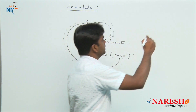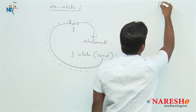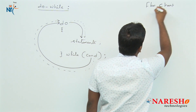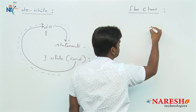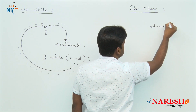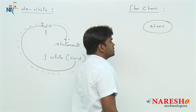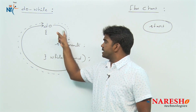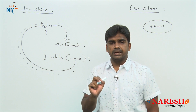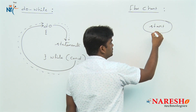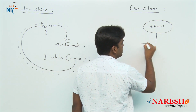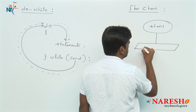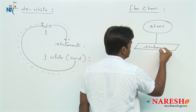Now let's see the flowchart. It starts with a start symbol. In a do-while loop, directly it is executing the statements — without checking any condition, the statements execute first.